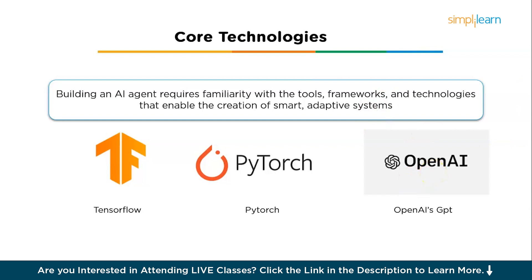OpenAI's GPT — Generative Pre-trained Transformer — is a state-of-the-art language model that excels in tasks like natural language generation, text completion, and conversational AI. GPT can be used to build chatbots, virtual assistants, and much more.